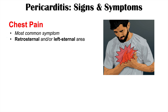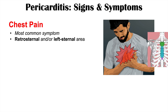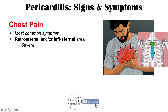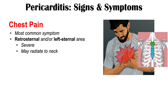This chest pain is going to affect the retrosternal area and/or the left-sided sternal area. Looking at this image, here's the sternum — the pain is often going to be behind the sternum, so retrosternal, or to the left, which is where the heart would be located. The heart deviates to the left in the majority of patients. The pain is often severe and may radiate to the neck and to the arm.